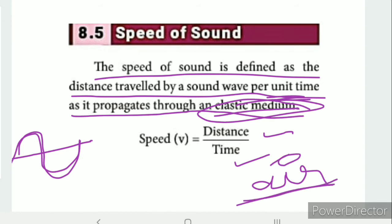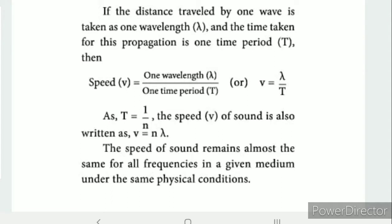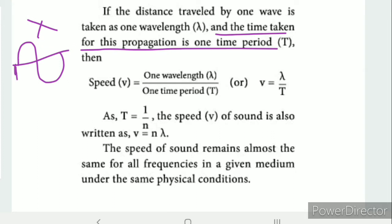If the distance traveled by one wave is taken as one wavelength (λ), and the time taken for this propagation is one time period (T), then substituting into the speed formula: velocity v equals one wavelength lambda divided by one time period T, giving v = λ/T.